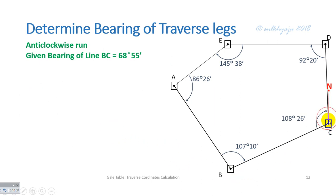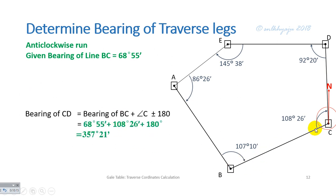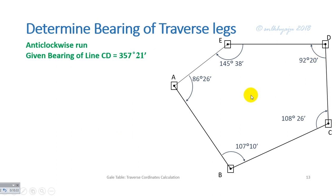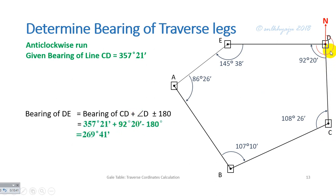Similarly, the bearing of line CD is calculated as the bearing of the previous line BC plus included angle C, plus or minus 180°, giving the bearing of CD as 357°21'. The bearing of line DE is calculated as the bearing of CD plus angle D, and since the sum of bearing CD plus angle D is greater than 180°, we deduct 180°, giving the bearing of DE as 269°41'.